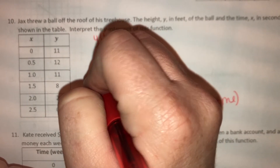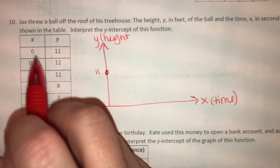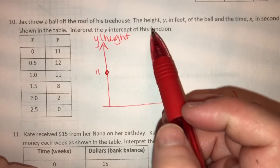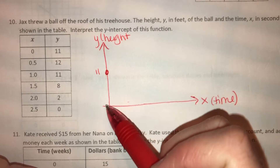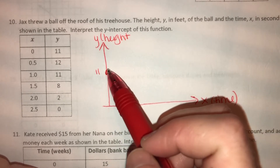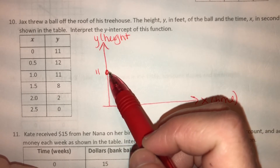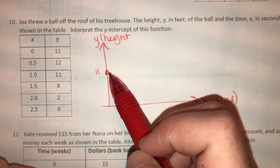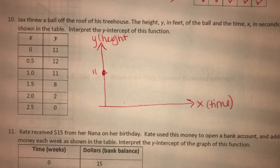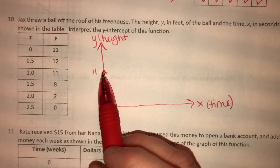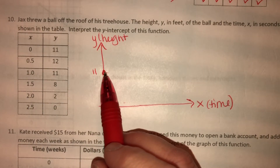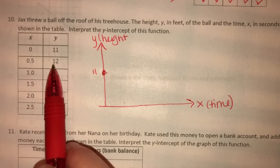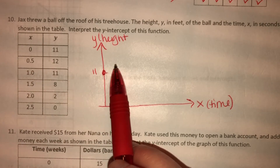He threw the ball off the roof of his treehouse, so before he even throws the ball, how high up is he starting? 11 feet. That probably means his treehouse is 11 feet up in the air when he's throwing the ball. So then he throws the ball, and after about 0.5 seconds, the ball goes up to 12 feet.